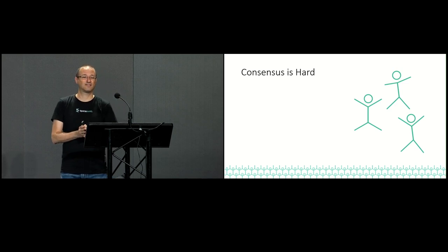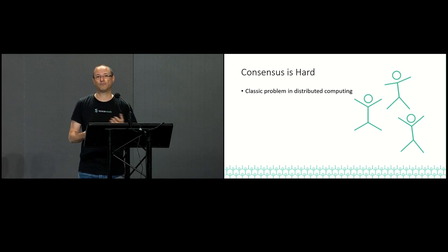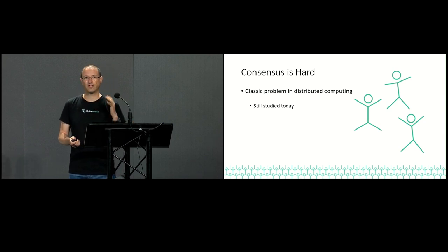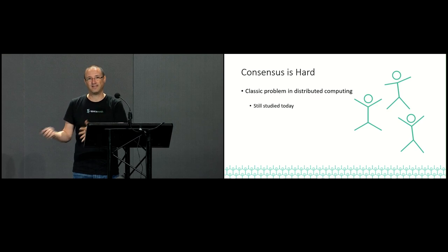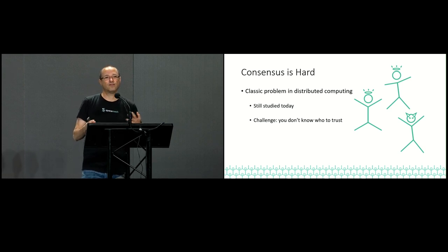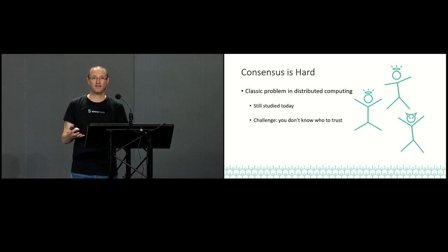The first thing to know about consensus is that consensus is really hard. It's a classic problem in distributed computing — we've been working on it since the 80s and we're still studying it today. There are still new papers being written all the time about consensus mechanisms. The main challenge is that you have lots of parties who want to agree, but you don't know which of them are honest. Some might be acting maliciously, and because you don't know, it's hard to decide who to listen to.